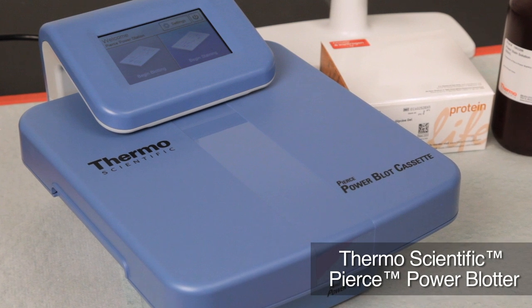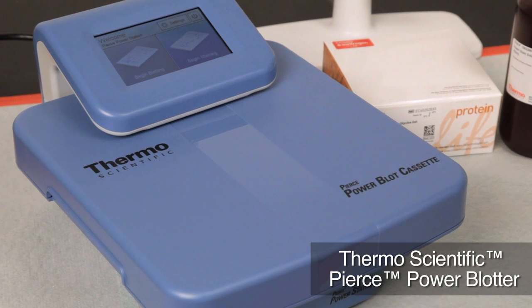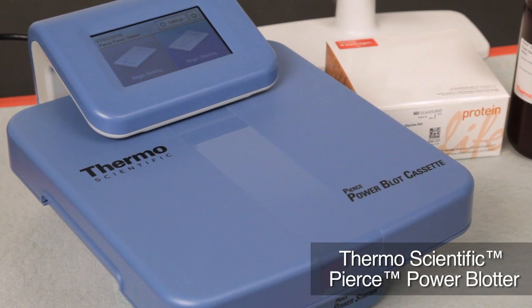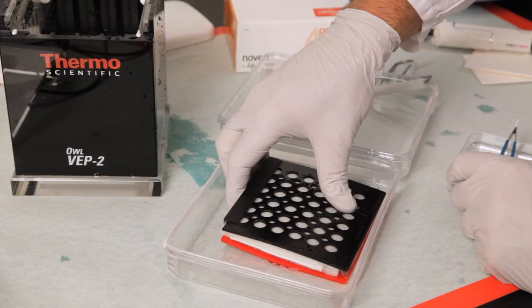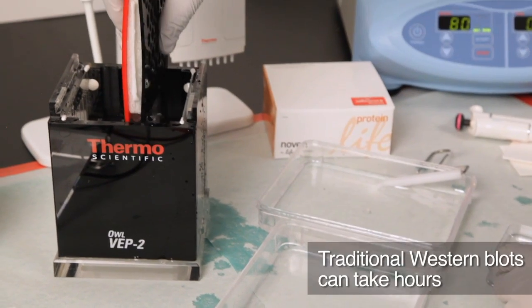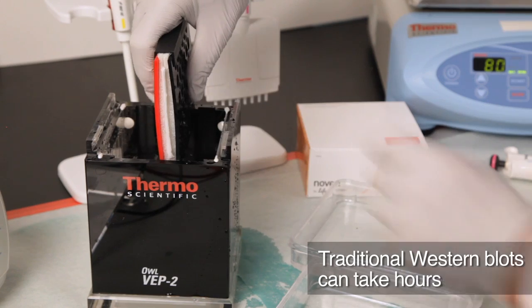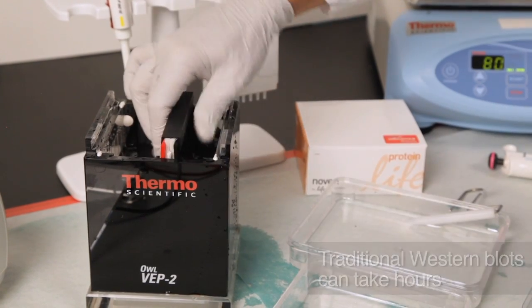The Thermoscientific Pierce Power Blotter is designed for rapid semi-dry transfer of proteins from polyacrylamide gels to membranes. Traditional western blot techniques often require a transfer of one hour to overnight to achieve good transfer efficiency.